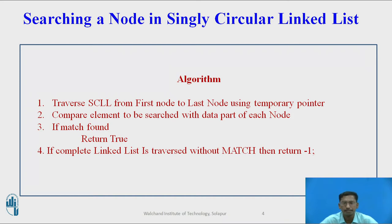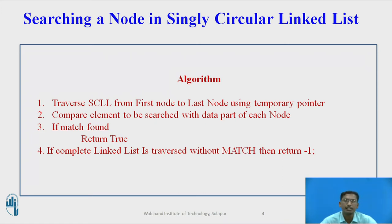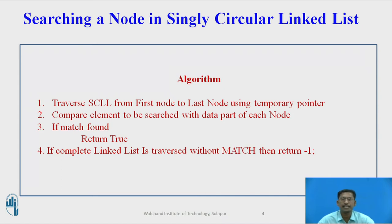If a match is found — if the element to be searched is equal to the data inside a node — you return true. If you have traversed the complete singly circular linked list and no match is found, you display that the element is not present. This is the algorithm to find out whether the element to be searched is present inside the singly circular linked list.